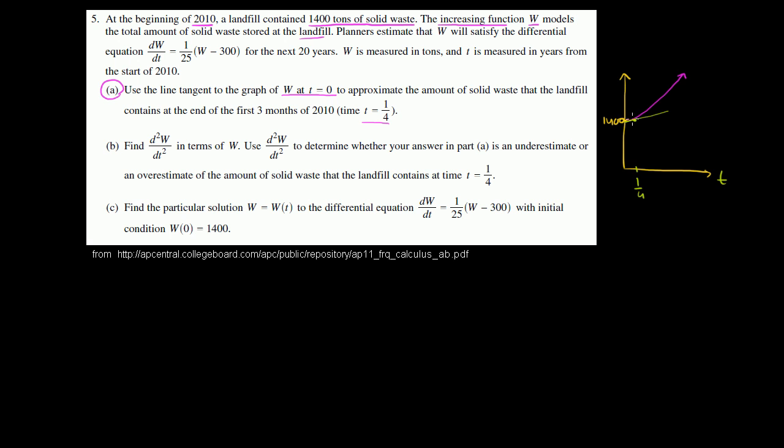So we really just have to figure out the slope of this line and see where that line is at t equals 1 fourth. And you say, wait, how do we know what the derivative of w is at 0 without knowing w? That's where we can go straight to this differential equation.